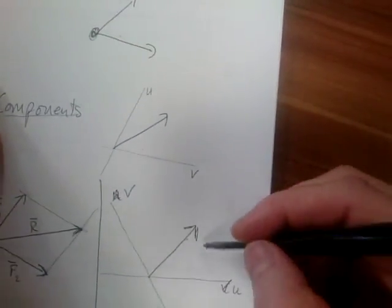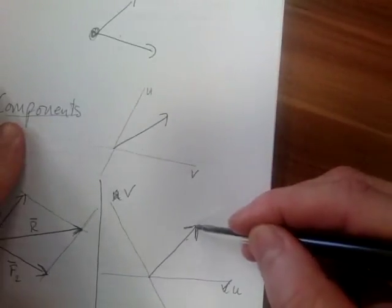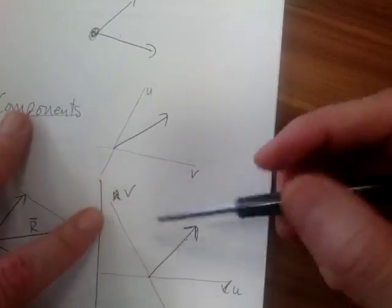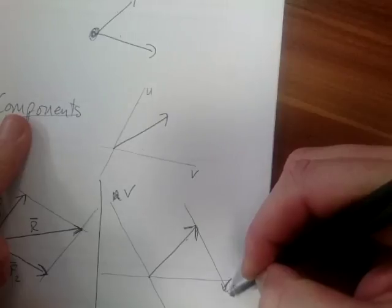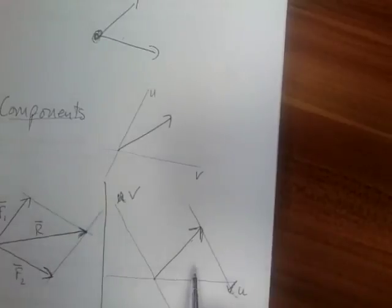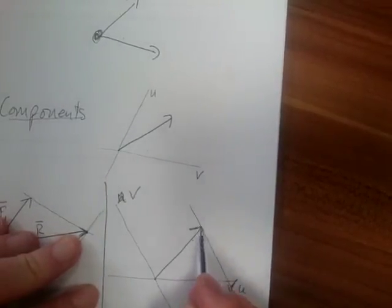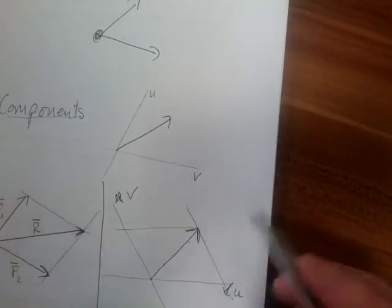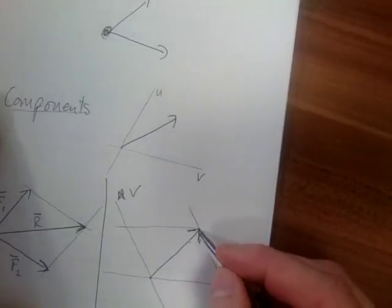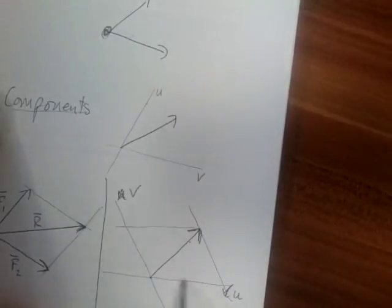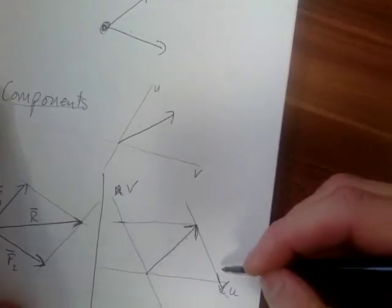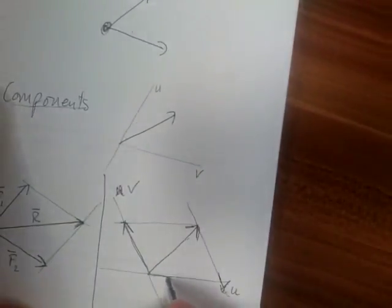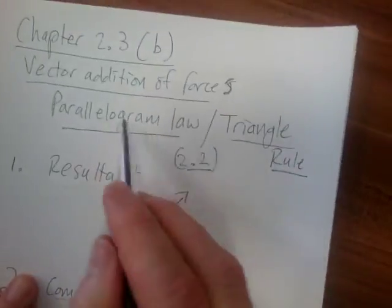What does that mean? It means that from the head of this resultant force vector, I draw a line parallel to the one axis until it cuts the other axis, and from the head of this force vector, I draw a line parallel to the other axis until it cuts this axis. And there I have my two components. It is also based on the parallelogram law.